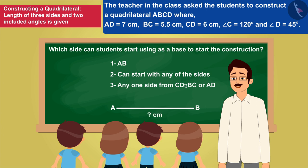In the given question, the measurement of the side AB is not given. We cannot create it without measurement. Therefore, we cannot consider AB as the base. Thus, option 1 is an incorrect answer.